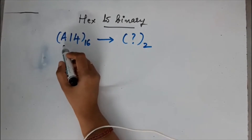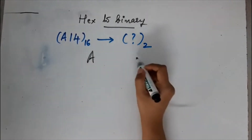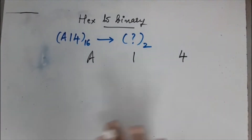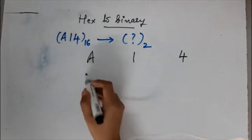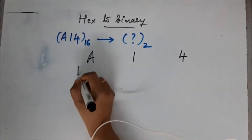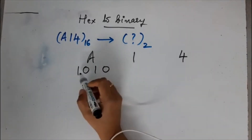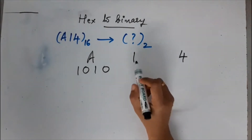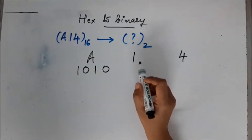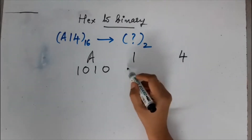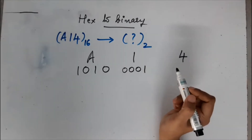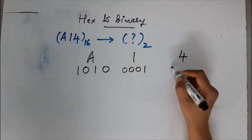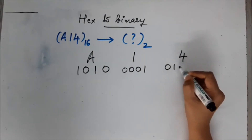So here we have A, 1, and 4. Just represent each of these digits in 4 bits in binary. A is 10, and 10 in 4-bit binary is 1010 (using weights 8, 4, 2, 1 — so 8 and 2). The digit 1 in 4 bits is 0001. The digit 4 in 3 bits is 100, but when representing hex in binary you must use 4 bits, so it is 0100.